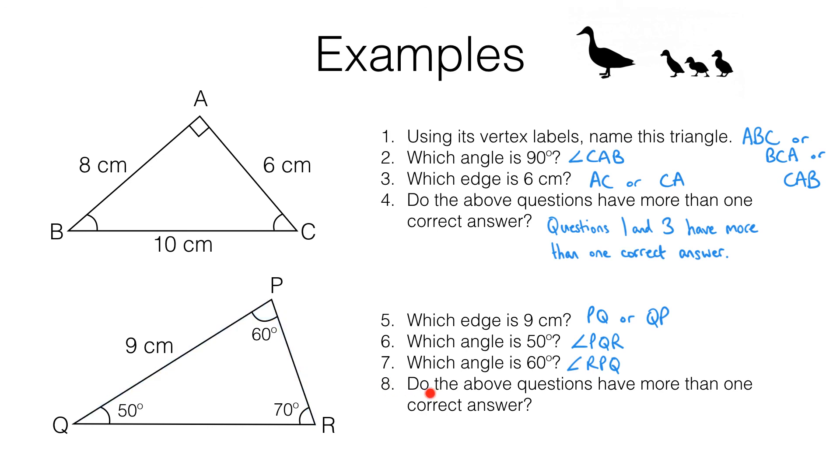Finally, question eight, do the above questions have more than one correct answer? Well, only in the case of question five, we could have called this edge here, PQ or QP. Both were acceptable, but the angle names had to be PQR and RPQ, because remember, we always try to name angles going in an anti-clockwise direction.